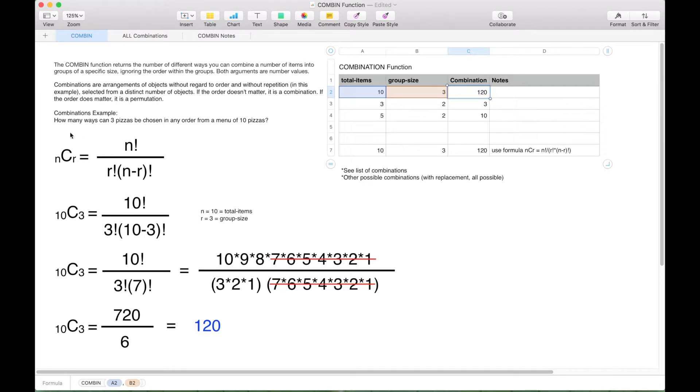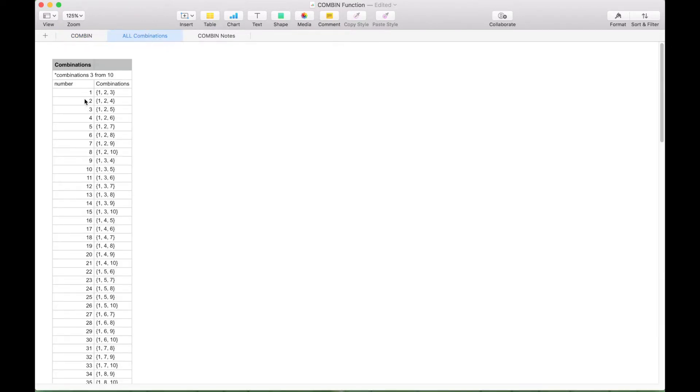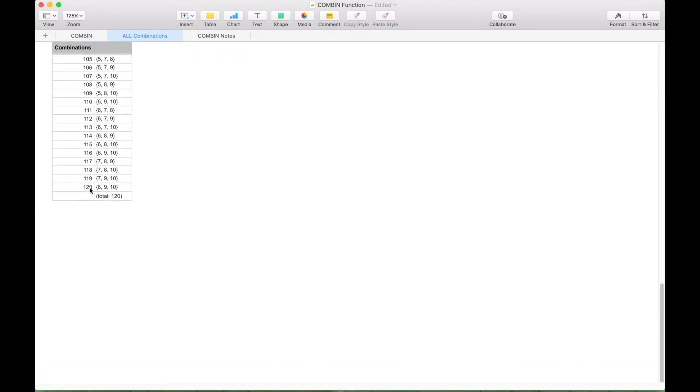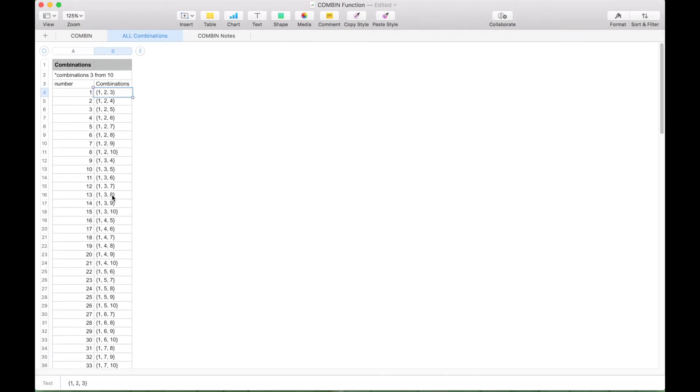Now again, using this example with the pizzas, if you wanted to see all the combinations, here we have a listing. If we scroll down to the bottom real quick, you can see there's 120 combinations. And each combination is listed here in column B.